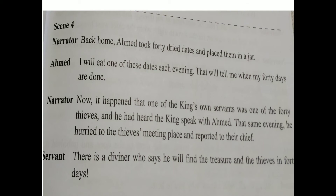Ahmed came back home. He couldn't count the days so he put forty dried dates in a jar. Each day he would move one dried date to another jar. While they were speaking in the palace, one of the palace staff — one of the king's assistants — was actually the main thief of the forty thieves. He went to report to the head thief. The servant ran and informed the chief of the thieves that the diviner is going to expose them.